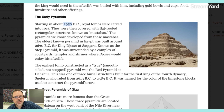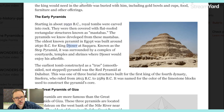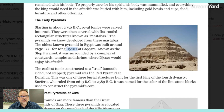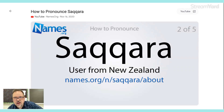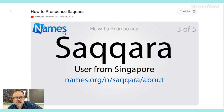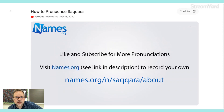The oldest known pyramid in Egypt was built around 2630 B.C. for King Djoser — the D is silent — at Saqqara. I looked this up and there are a bunch of different ways people pronounce it. Something like 'Saqqara.' There's one person from Singapore who says it, and some others — all saying some version of 'Saqqara.'